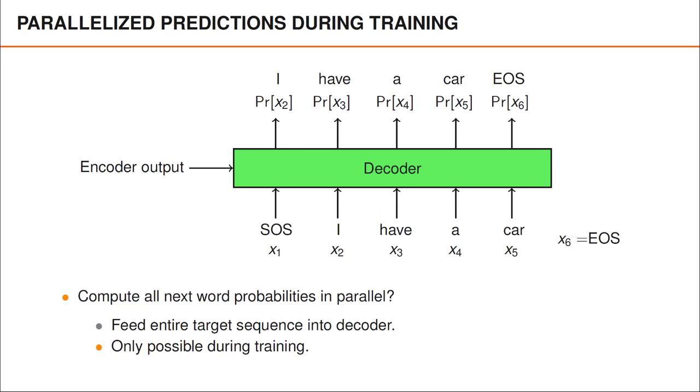We note that this is only possible during training, since we obviously don't have access to the target translation when we want to use the network to translate a sentence. So what we describe here only speeds things up during training, but this is of course also very important.